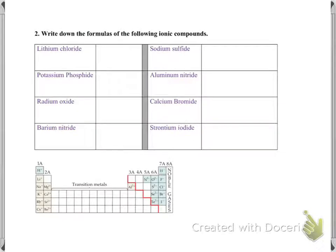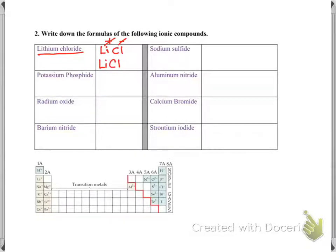Now, we were given formulas and wrote the names. Now we're going to do the opposite — the name is given and we will write down the formulas. First, identify what elements are given. For lithium chloride: write down their symbols. Lithium is Li. Chloride is chlorine, Cl. Lithium is in the first A group — first A group elements lose one electron and have one positive charge. Chlorine is in the seventh A group and has one negative charge. One positive cancels with one negative, so the formula is LiCl. Ionic compounds are neutral — when writing the final formula, there should be no charges.